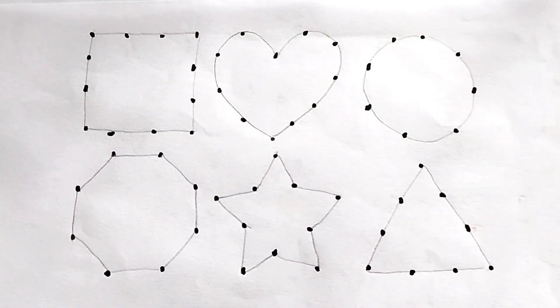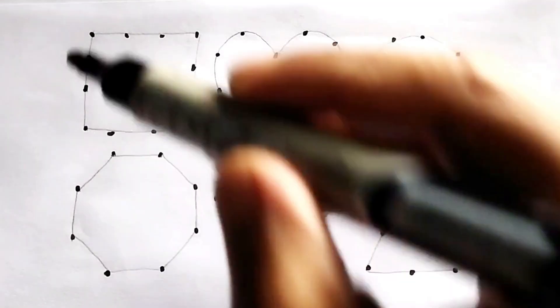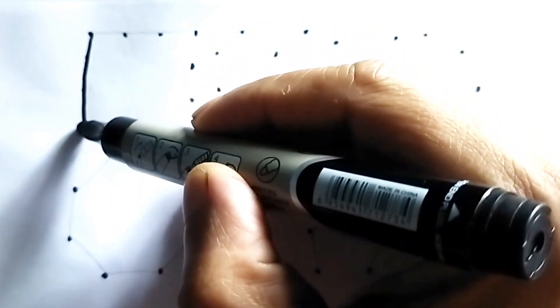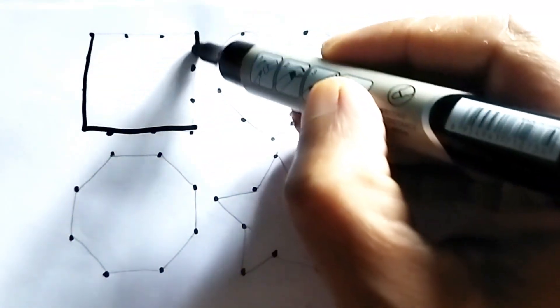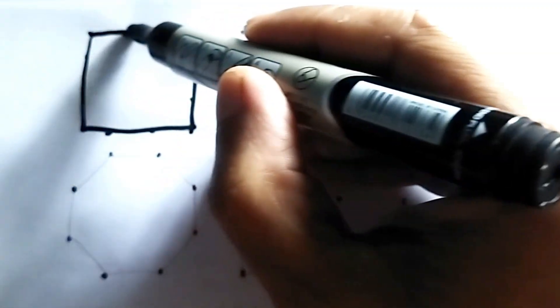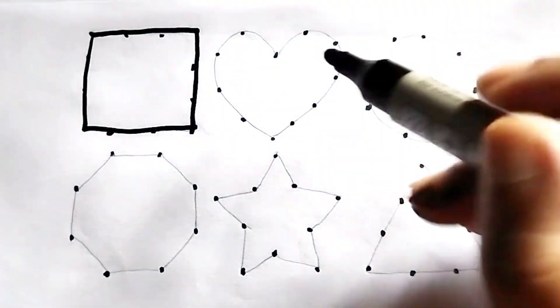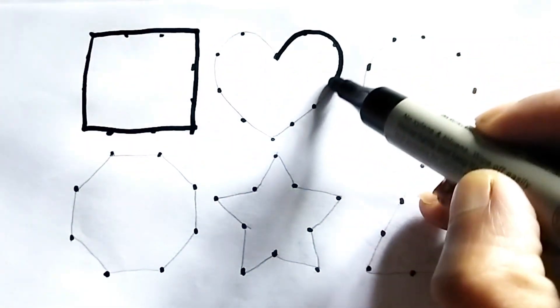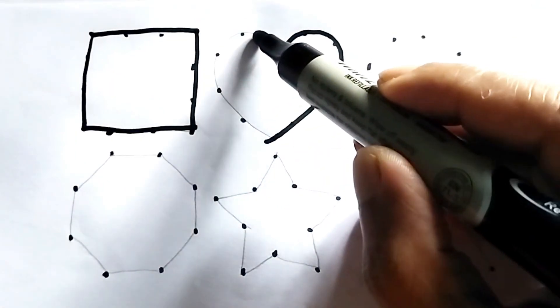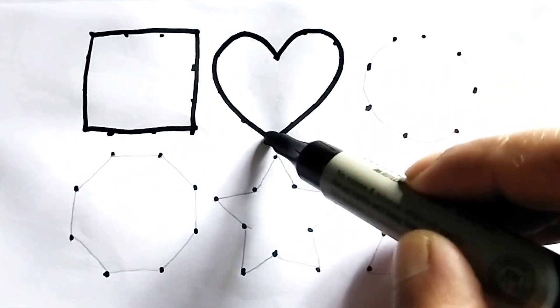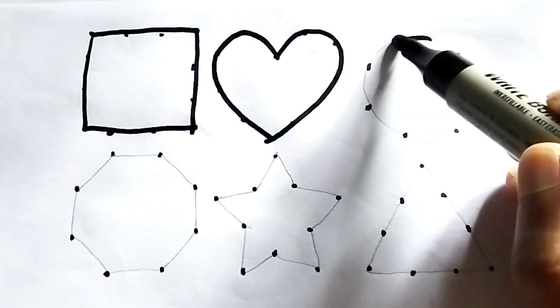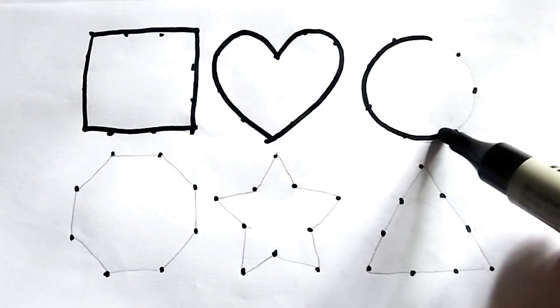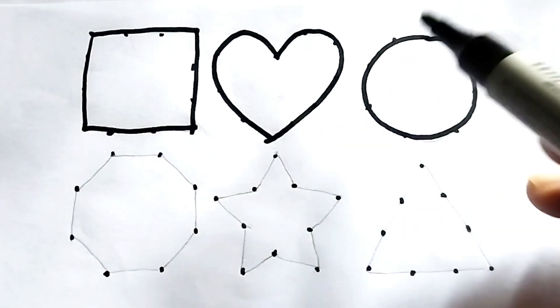Hello kids, how are you? Today we will learn different types of shapes and different types of colors. Now I am adding the dots. One, two, three, four. This is the square. Heart shape, this is heart shape. Circle, circle.